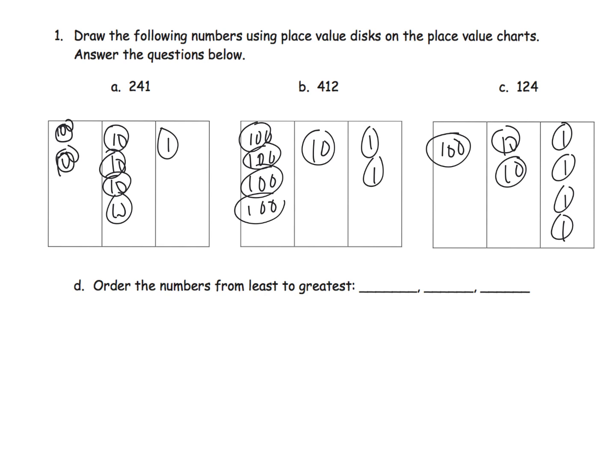So now, in order to compare these numbers, we have to look, and it says from least to greatest. We can start by seeing that this guy has two hundreds, this has four hundreds, and this has 100. Automatically, this makes this guy the least. So 124 is the least. And then we can go back and compare these two. We can see that this guy has two in the hundreds, this guy has four in the hundreds. So that makes 241 the next least, and 412 the greatest. So that's from least to greatest.